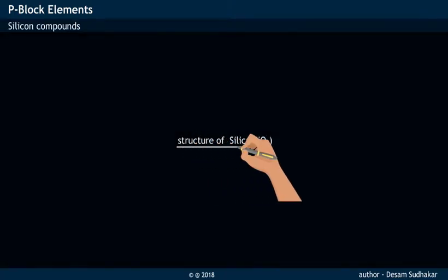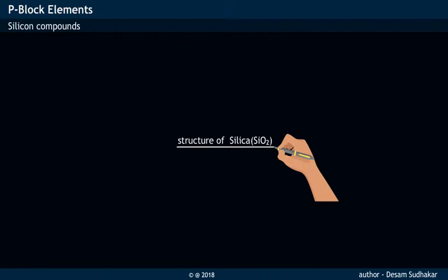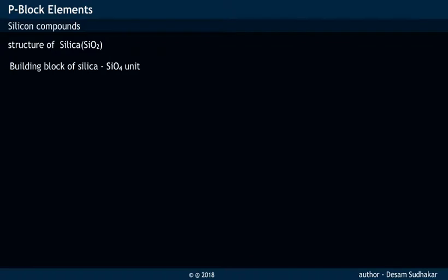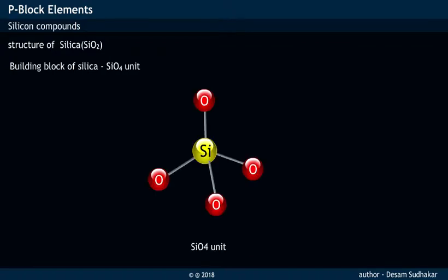What is the structure of silica or SiO2? The building blocks of silica are SiO4 units. The central silicon atom present in SiO4 unit is sp3 hybridized.